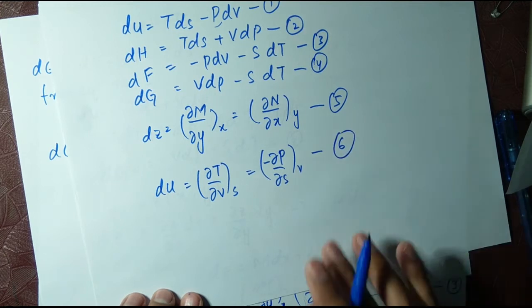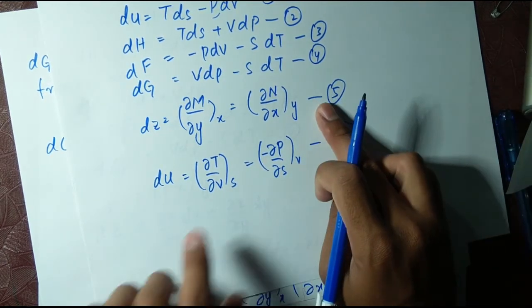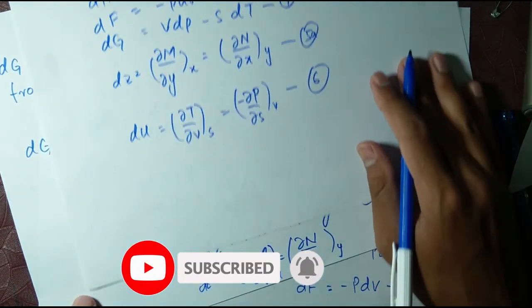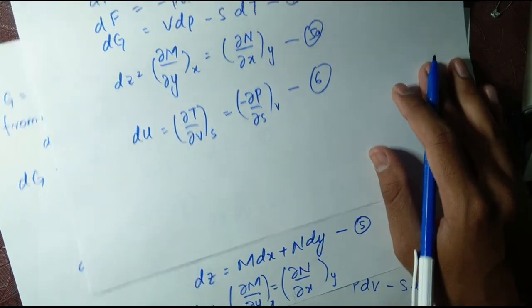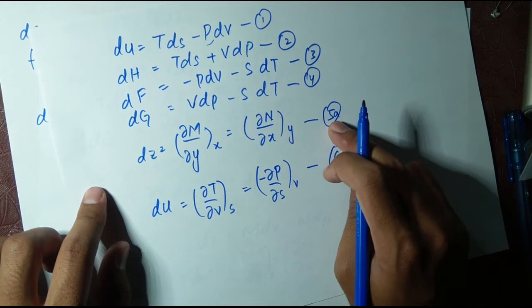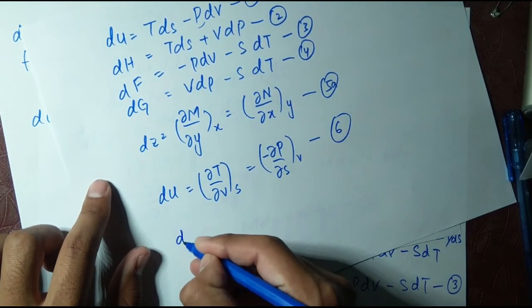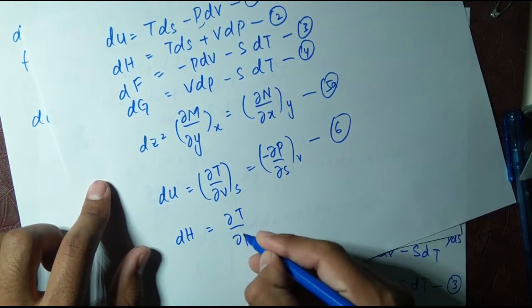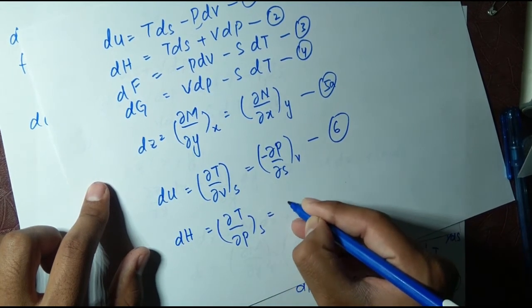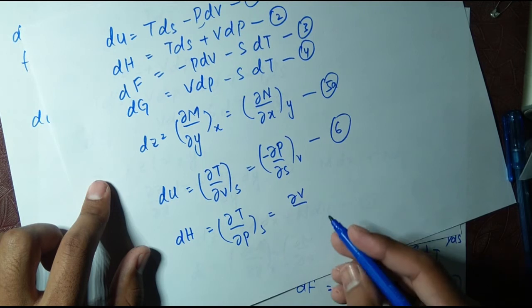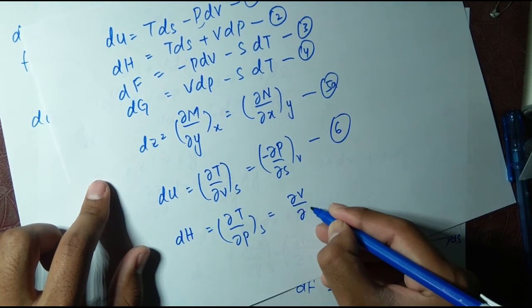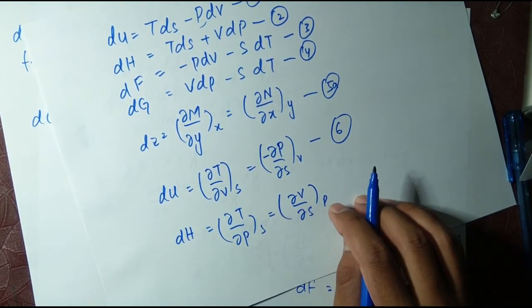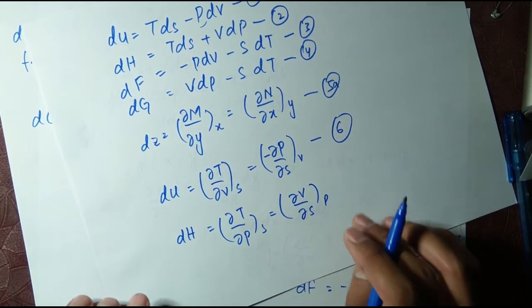Comparing equation five with equation two (dH = T dS + V dP) gives the second Maxwell relation: ∂T/∂P at constant S equals ∂V/∂S at constant P. This is equation number seven.